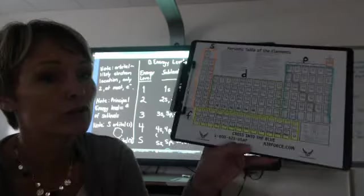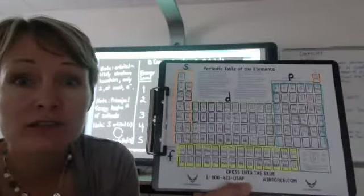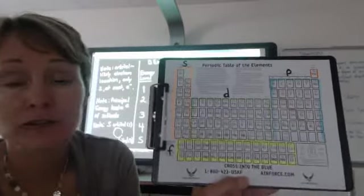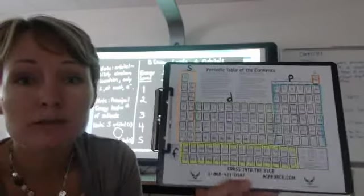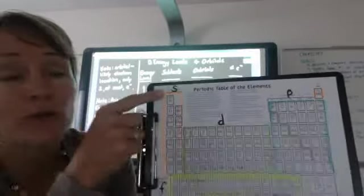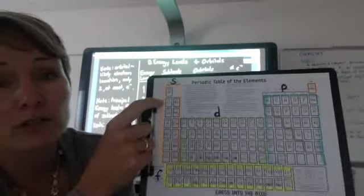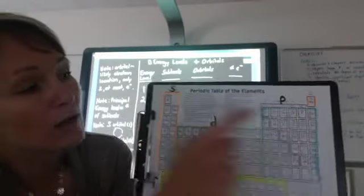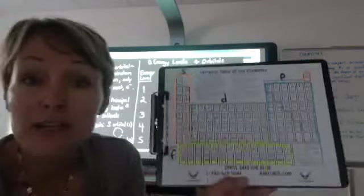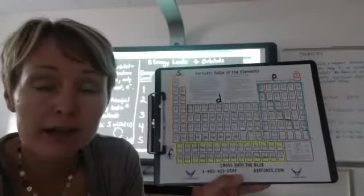If you'll look at your periodic table, when we talk about energy levels, there are seven energy levels that we will use to place electrons in when we're drawing models of an atom. The first energy level correlates with the first period or the first row of the periodic table. The second energy level correlates with the second row of the periodic table. The third energy level, the third row, and so on. So there are seven rows and seven energy levels.